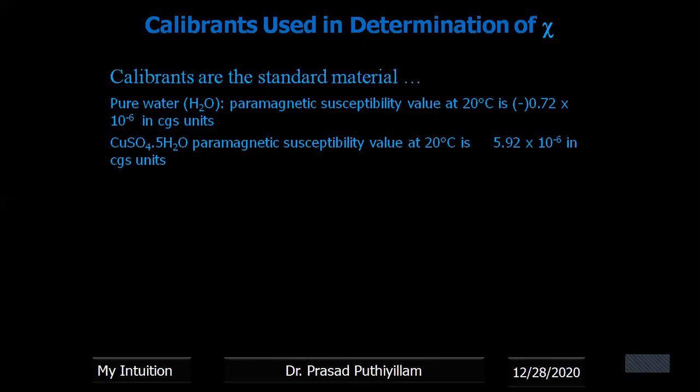The second example as a calibrant is copper sulfate pentahydrate. Its paramagnetic susceptibility value at 20 degrees Celsius is 5.92 × 10⁻⁶ in CGS units. The problem with copper sulfate is that its spline structure is not that much perfect, so that the packing of the material standard in the tube will always create some voids and it will affect the value.